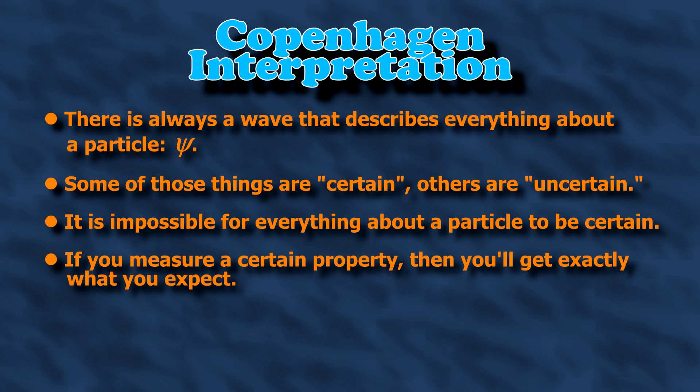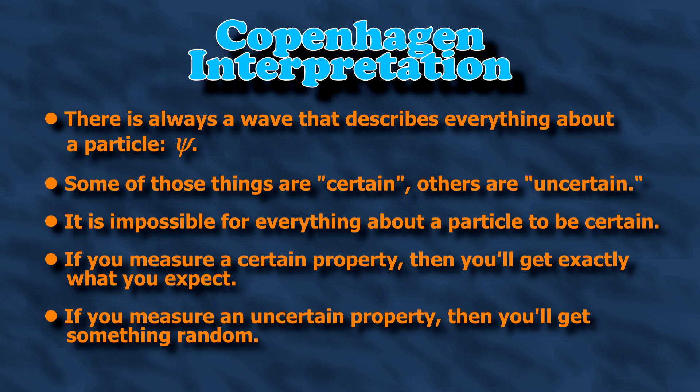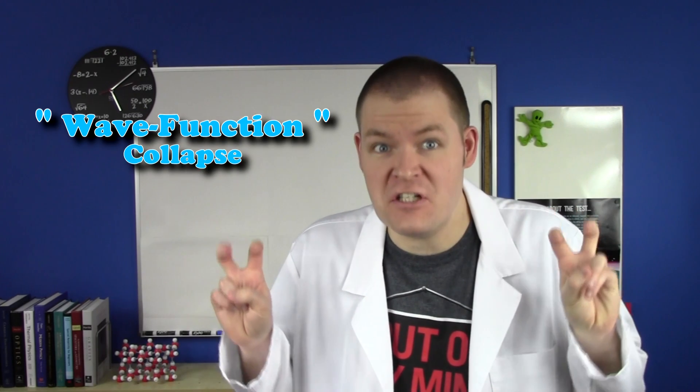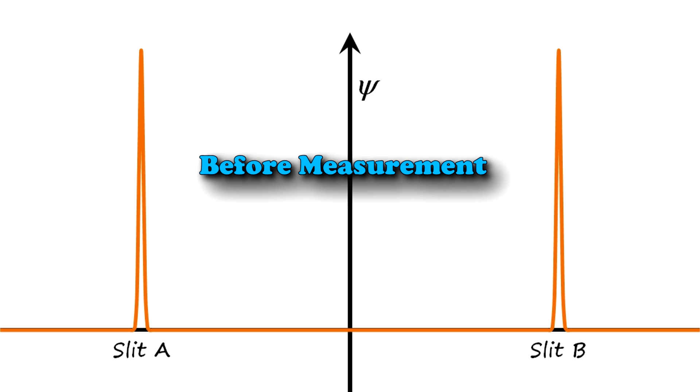If you measure a certain property, then you get exactly what you expect. If you measure an uncertain property, then you'll get something random, but you still get something. That last point is called wave function collapse, but it's a bit misleading. The particle doesn't actually stop behaving like a wave. It's just that the wave used to look like this, but now it looks like this. You changed it by taking the measurement.